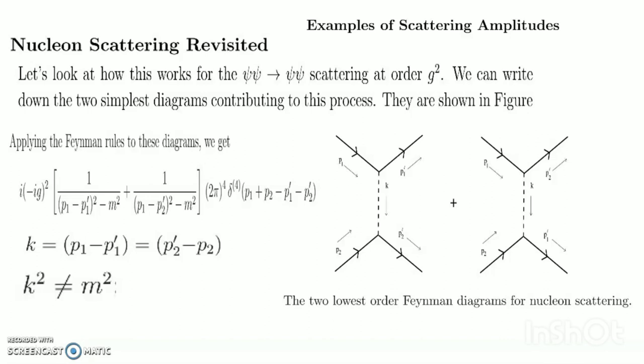In contrast, the momenta on the external nucleon legs all satisfy p² = M², the mass of the nucleon — they are on-shell. One final note: the addition of the two diagrams above ensures that the particles satisfy Bose statistics. There are also more complicated diagrams which contribute to the scattering process at higher orders.